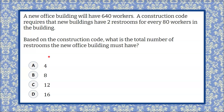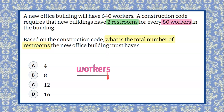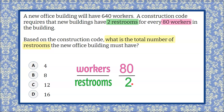Welcome back! We know that we're finding the total number of restrooms for this new office building — a real-world ratio. We're told that for every 80 workers, the building must have two restrooms. So let's write that down: workers to the number of restrooms — if there are 80 workers, there must be two restrooms.